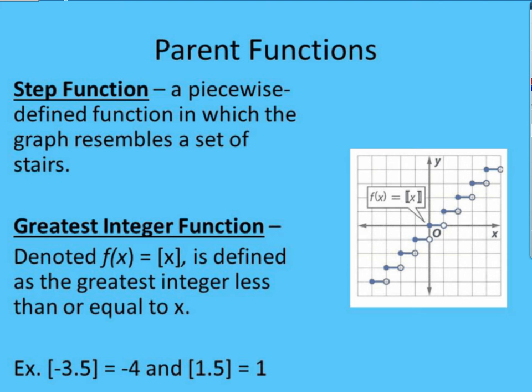The greatest integer function is denoted with the brackets around the x. And this is the greatest integer less than or equal to x. So if we have -3.5 inside those brackets, the integer that is less than or equal to that one would be -4. And if we have 1.5 in there, the integer that is less than or equal to that would be 1.